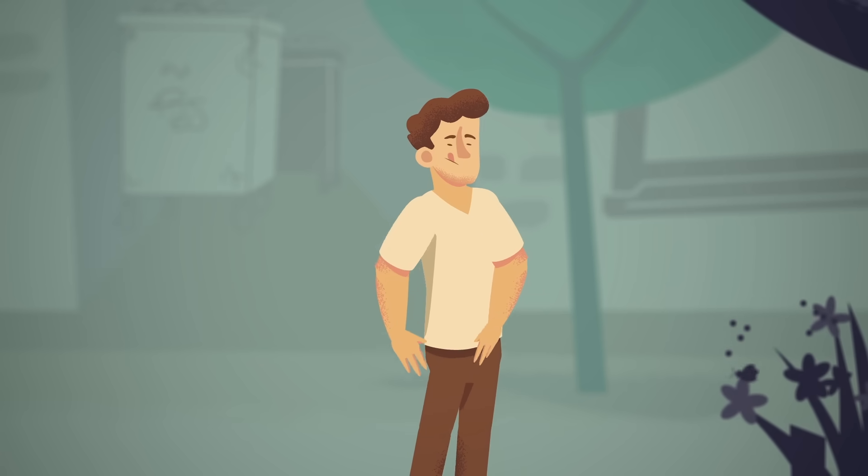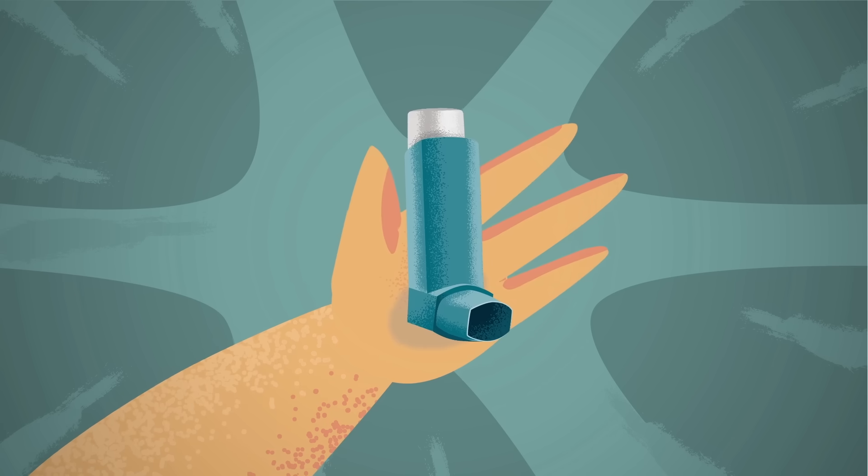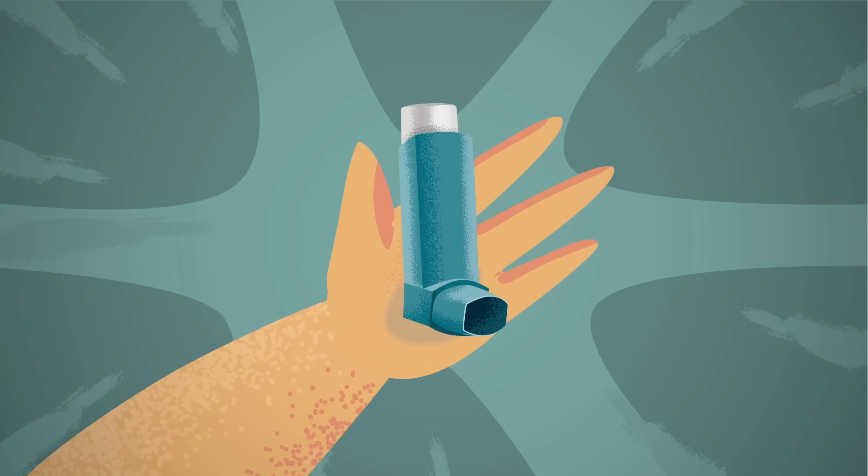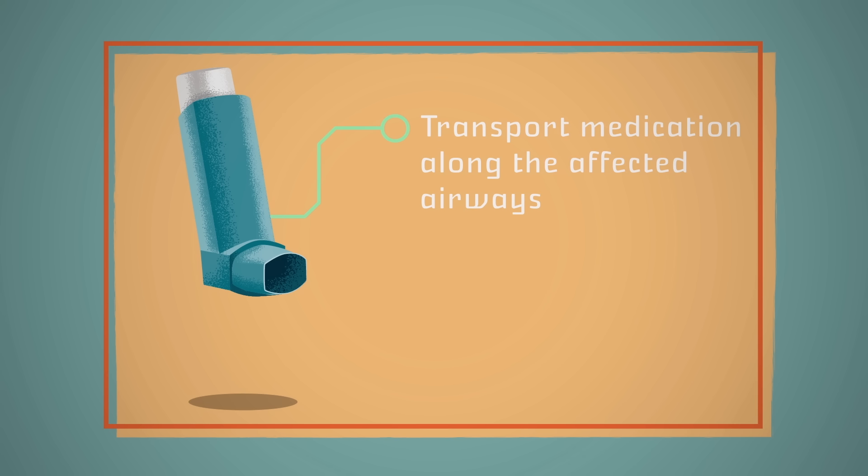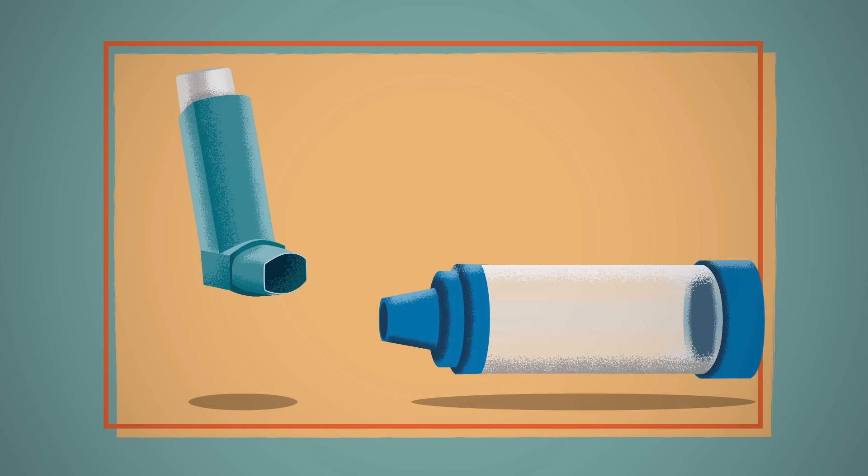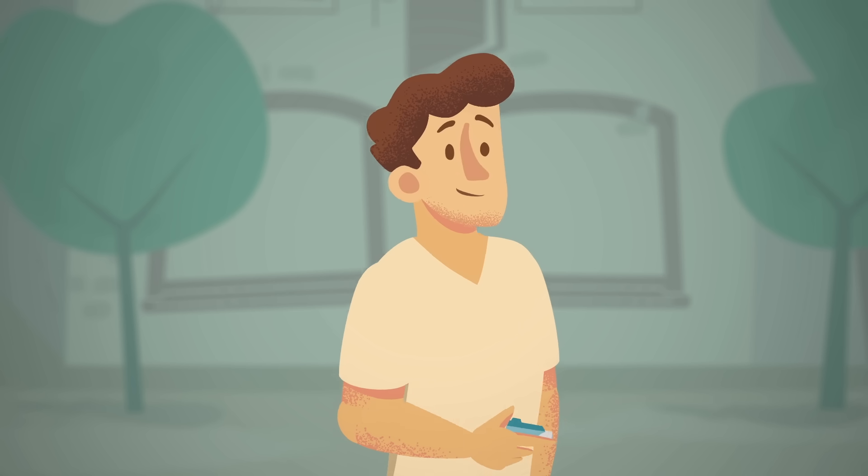This is where inhalers, the primary treatment for asthma, come in. These medications help asthmatics both control and prevent their asthma symptoms. Inhalers transport medication along the affected airways, using a liquid mist or fine powder to treat the problem at its source. They come in two forms.